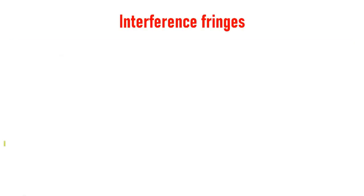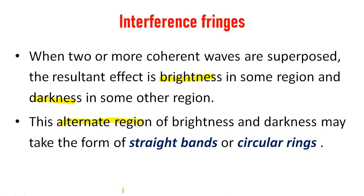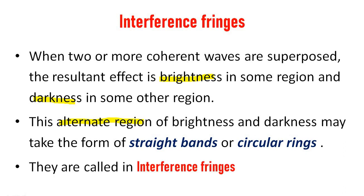Interference fringes. When two or more coherent waves are superposed, the resultant effect is brightness in some regions and darkness in other regions. This alternate pattern of brightness and darkness may take the form of straight bands or circular rings. They are called interference fringes.